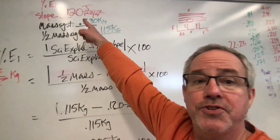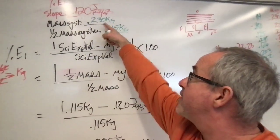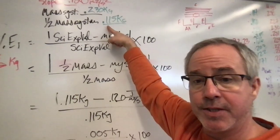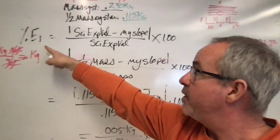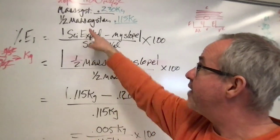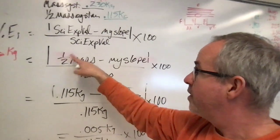We also did a percent error on this. You'll need to know the slope of your graph, you'll need to know the mass of your system and half the mass of your system because that's the scientifically expected value for the slope. We used our formula for percent error because the scientifically expected value is half the mass of the system.